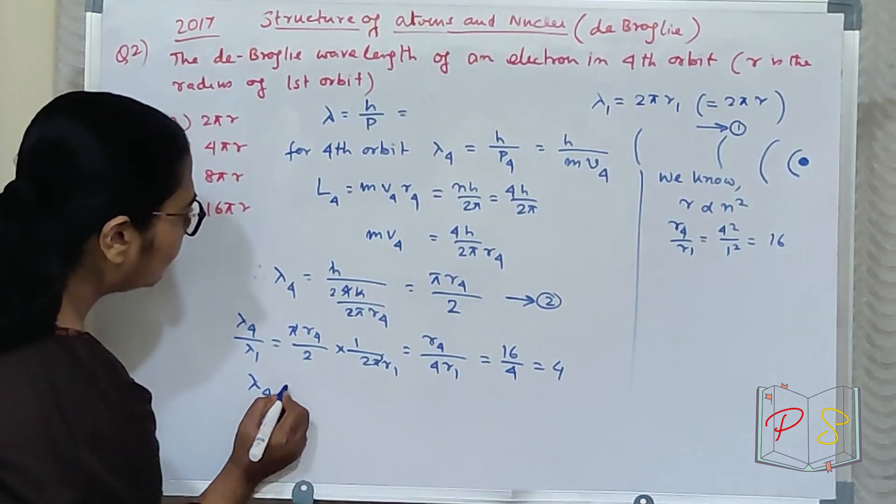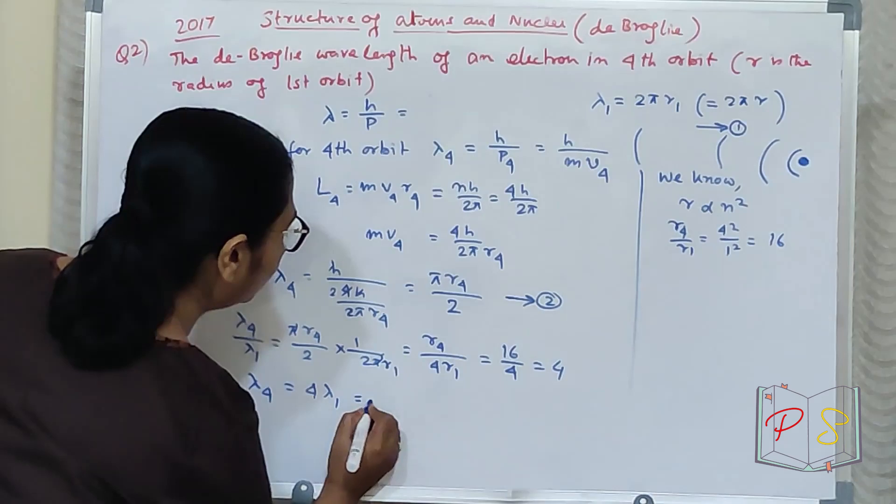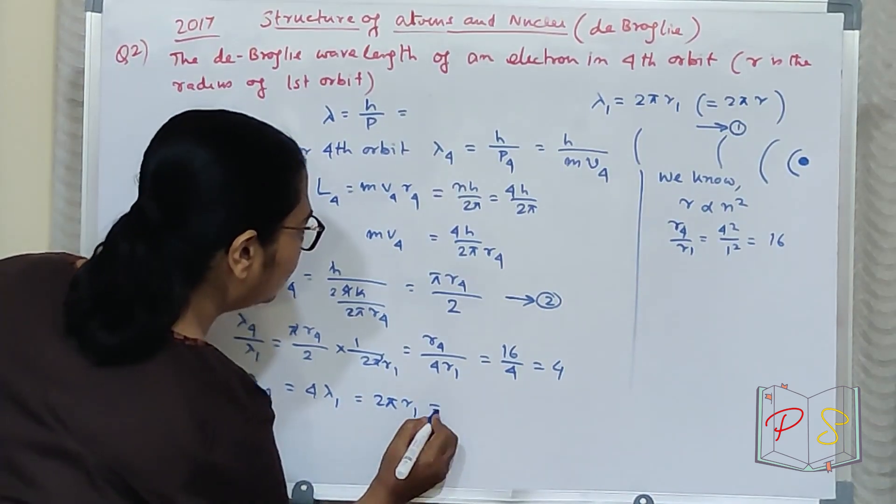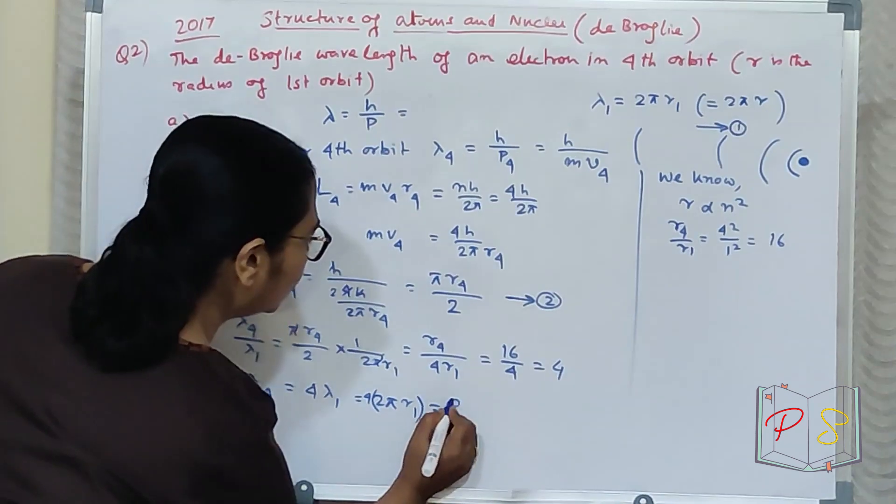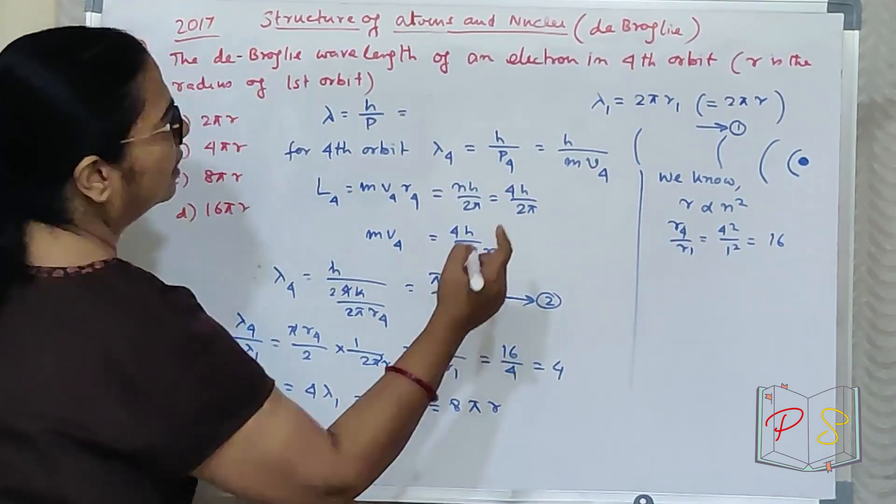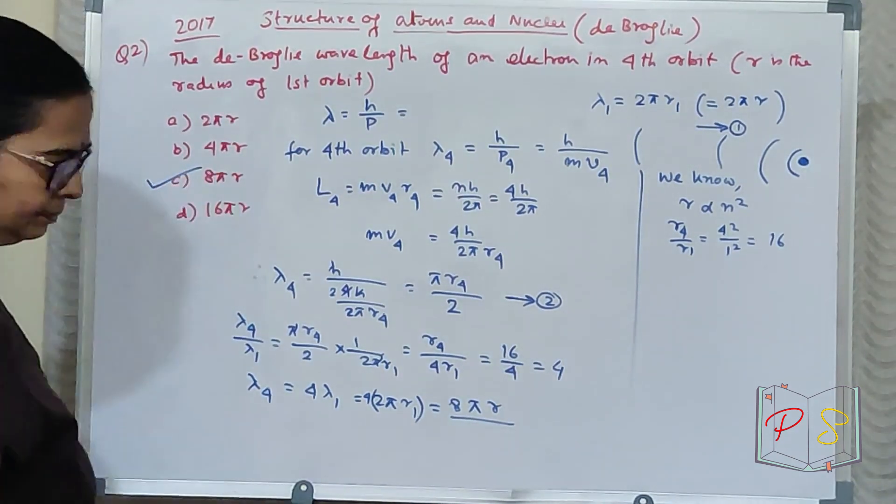So lambda₄ = 4 × lambda₁. My lambda₁ is what? 2πr₁, so 4 × 2πr₁ = 8πr. r₁ means r, so 8πr. Clear?